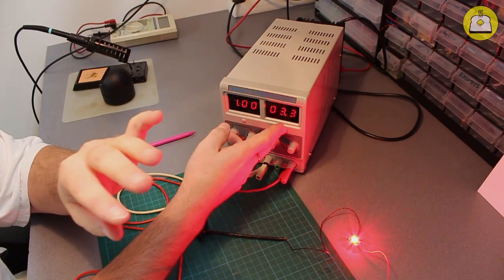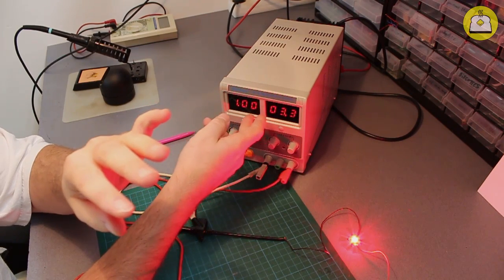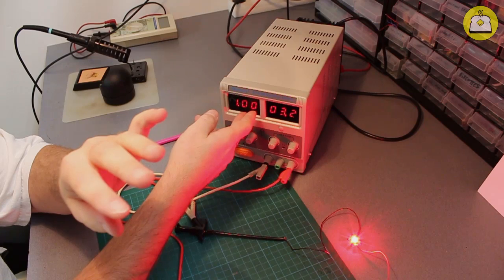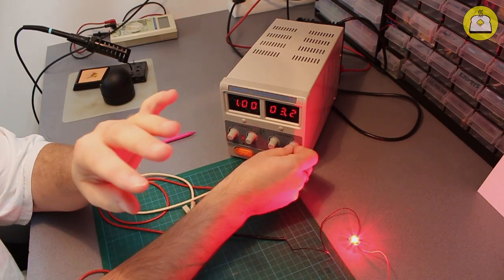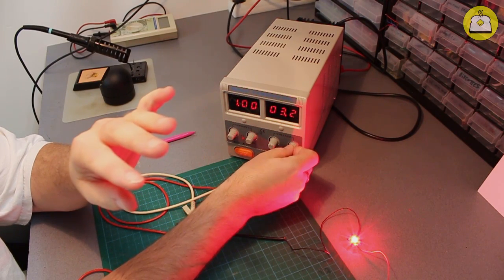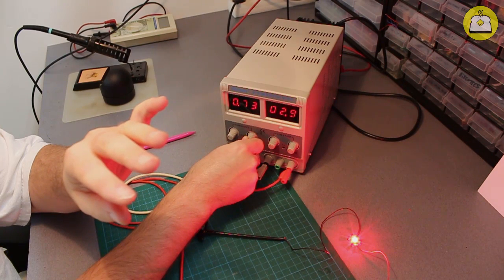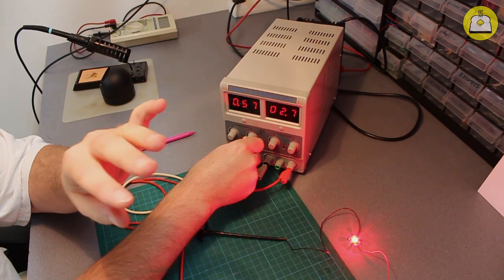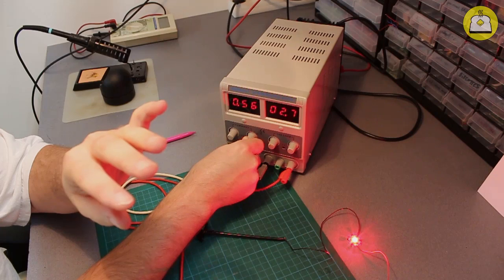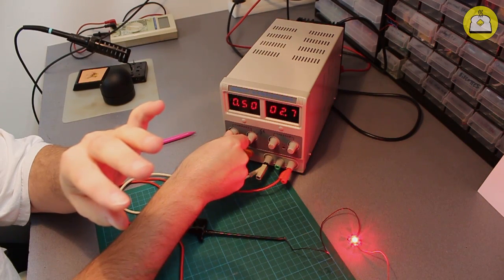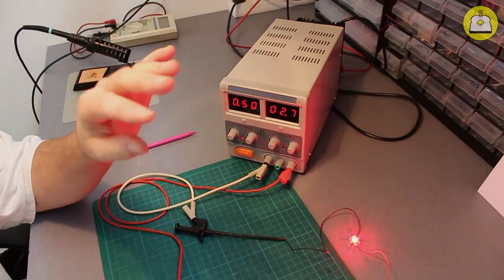And if I want to turn it down just a little bit I'm going to go back to let's say 600, so that doesn't heat too much, or even 500. I can set my current here, 500, and I have my LED running at 500 milliamps.